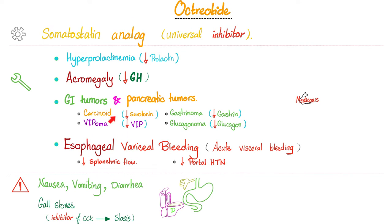In a previous video, we talked about carcinoid syndrome — if you haven't watched it, please do. Side effects of octreotide include nausea, vomiting, and diarrhea like most medications. Don't forget gallstones, because octreotide inhibits CCK, which inhibits the contraction of the gallbladder, causing stasis of bile and increasing the risk of stone precipitation. To understand solution saturation and stone formation, check out my video on kidney stones.